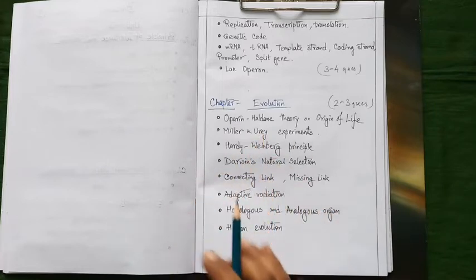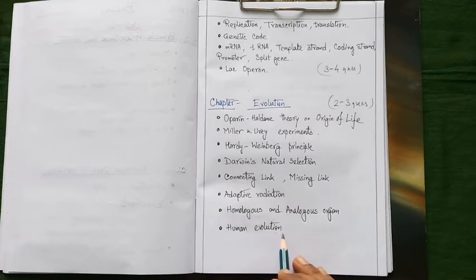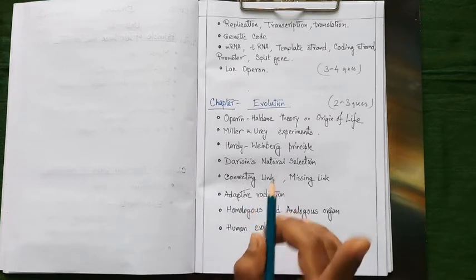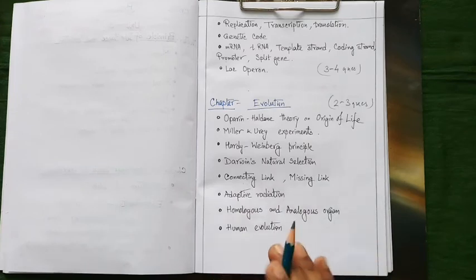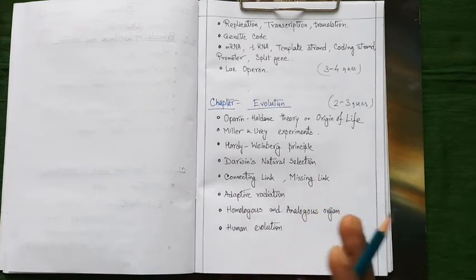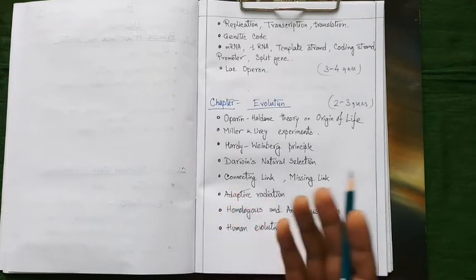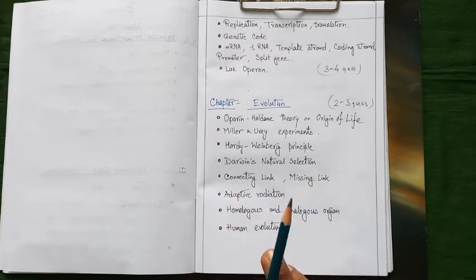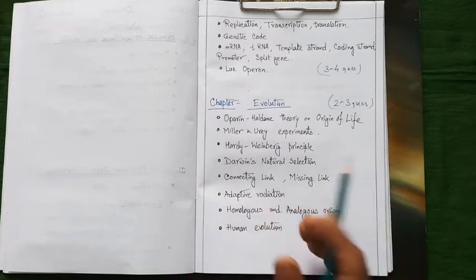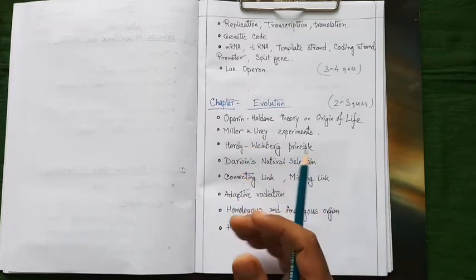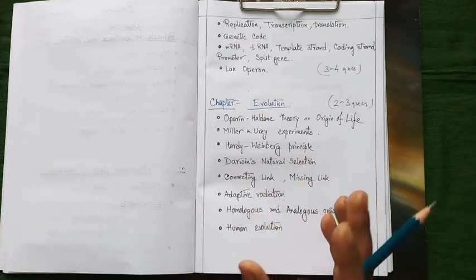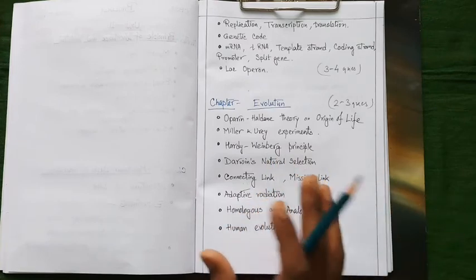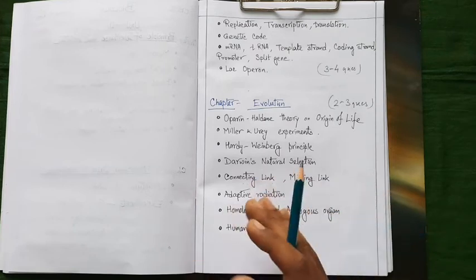Last but not the least we have to prepare details on the human evolution. You may certainly get one to two questions from this single section. You need to memorize all the hominid fossils with their common name as well as their scientific name with their characteristic features. You may easily encounter the question like give the characteristic feature of Java man, give the characteristic features of Cro-Magnon man. So you need to know the common name of those fossil hominid fossils as well as their scientific name.